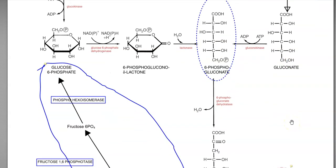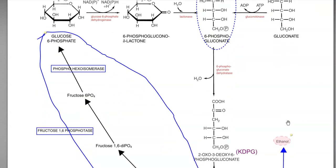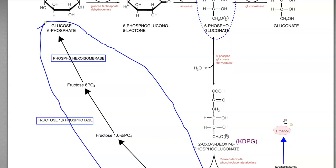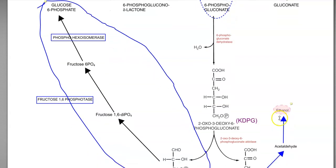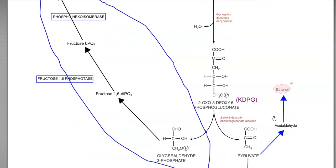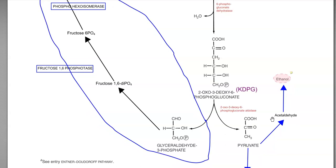As 6-phosphogluconate is an important intermediary compound, it is further acted upon by the enzyme 6-phosphogluconate dehydratase, resulting in the formation of 2-oxo (keto)-3-deoxy-6-phosphogluconate, also referred to as the KDPG molecule. This KDPG is further converted by 2-keto-3-deoxy-6-phosphogluconate aldolase enzyme into glyceraldehyde-3-phosphate and pyruvate.